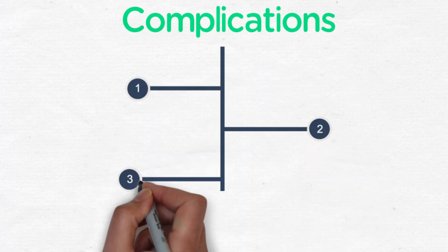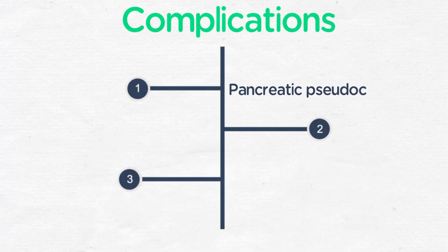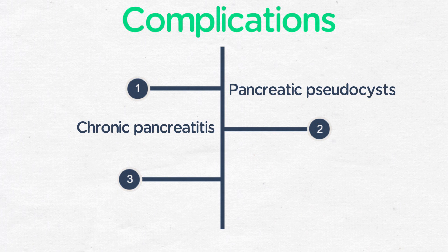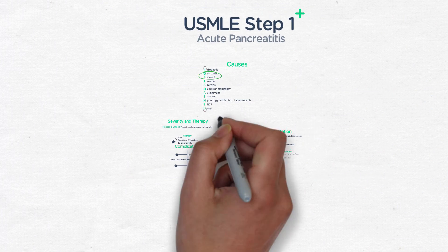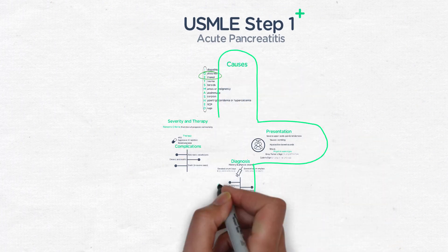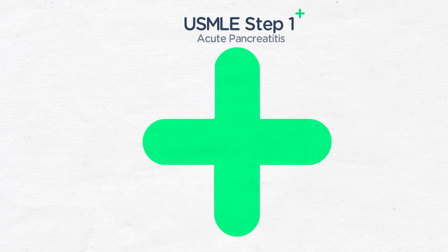Complications of acute pancreatitis include pancreatic pseudocysts, chronic pancreatitis, and even death in severe cases. Thank you.